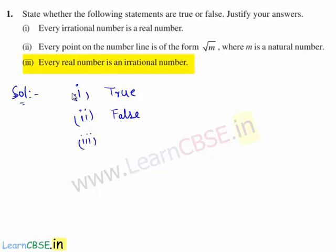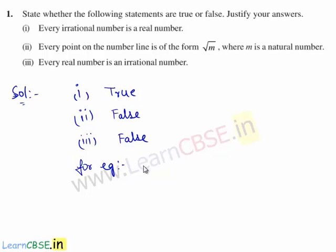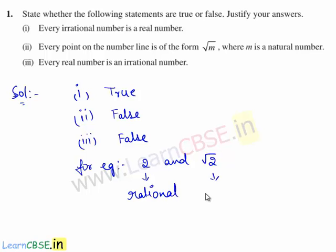The third statement is: every real number is an irrational number. The given statement is false, because the real numbers are the set of both rational numbers and irrational numbers. For example, consider two real numbers: 2 and √2. Both are real numbers, but 2 is a rational number and √2 is an irrational number. Hence a real number can be either rational or irrational, but need not be irrational. Therefore the third statement is false.